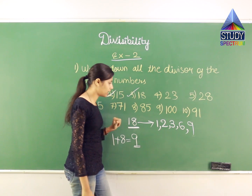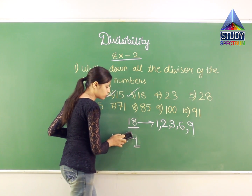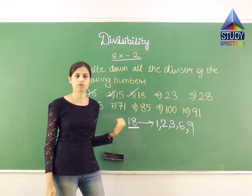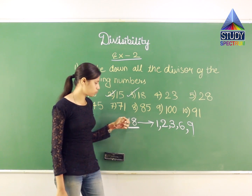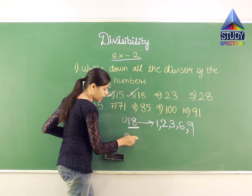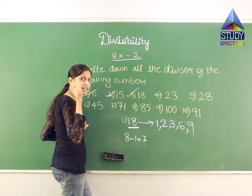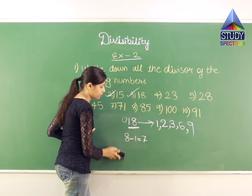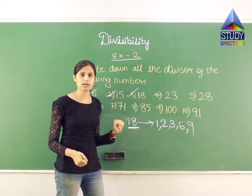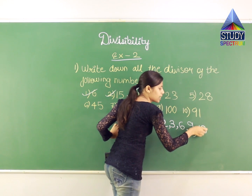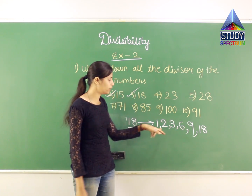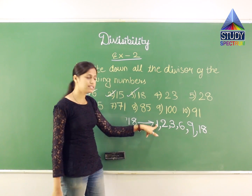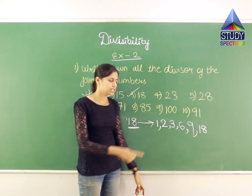Now 10: the condition is it should have 0 at the end, but I don't have 0, so 10 is not a divisor for 18. For 11, applying the alternating digit sum test: the result is not 0 or divisible by 11, so 18 is not divisible by 11. It is not divisible by 12, 13, 14, 15, 16, and so on. 18 is divisible by 18 itself. So the possible divisors of 18 are 1, 2, 3, 6, 9, and 18. Note that 1 and the number itself are always fixed divisors for any number.